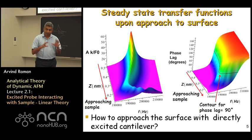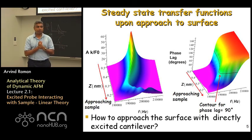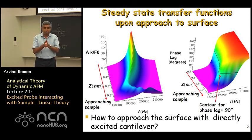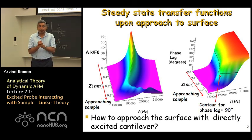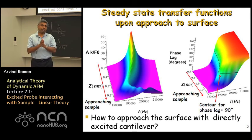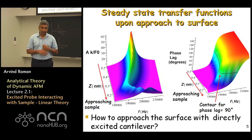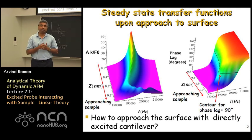With this global plot we are going to do three thought experiments. The first thought experiment is to approach the sample with the directly excited probe while keeping the drive frequency constant, and ask what would happen to the amplitude and phase. Then we will do a couple more thought experiments involving phase-locked loops and other feedback techniques to understand what happens when approaching the sample using those methods.